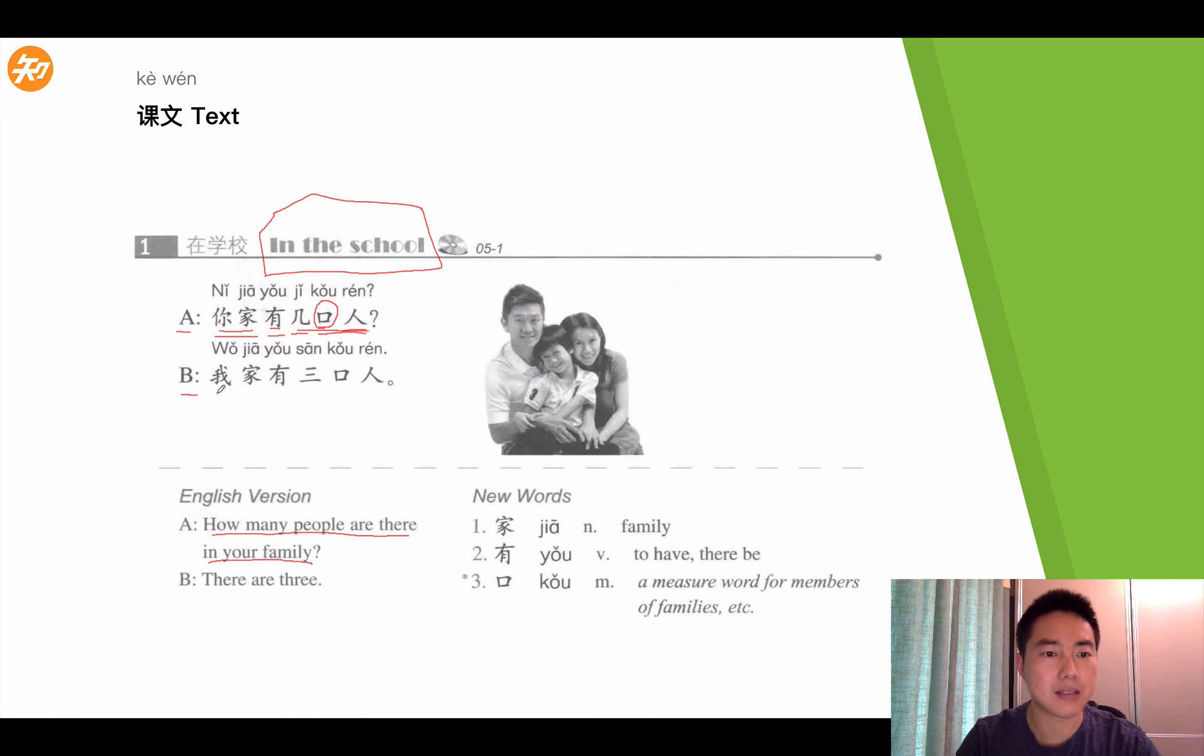B answered, 我家有三口人。There are three in my family. 我家, my family. 有, there'd be, 三, three. 口, the measure word for people. 人, people. So, there are three people in my family.